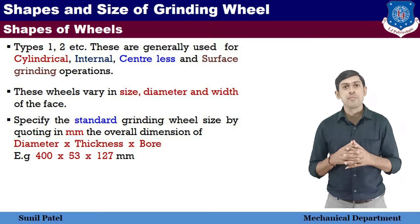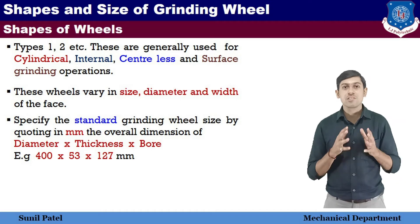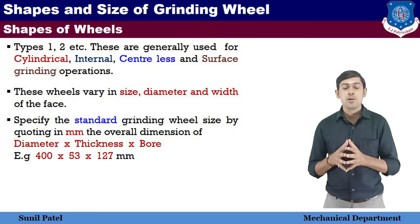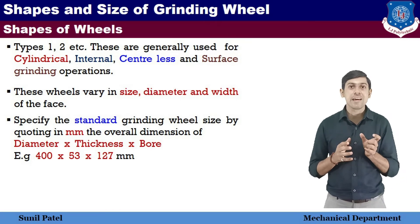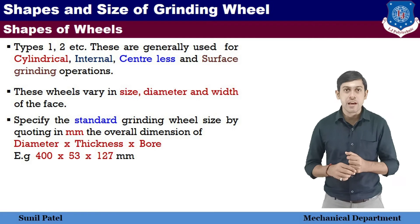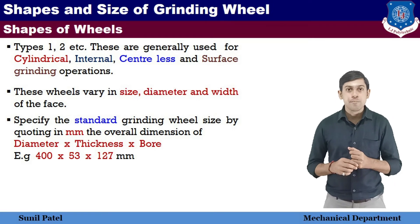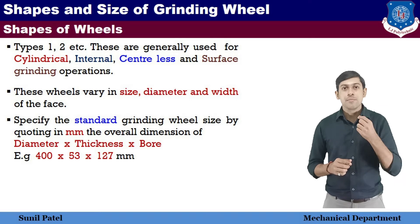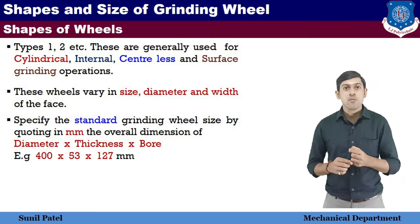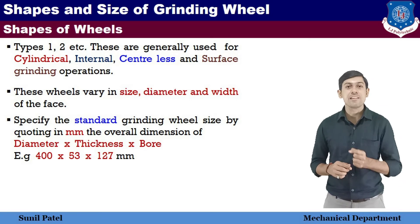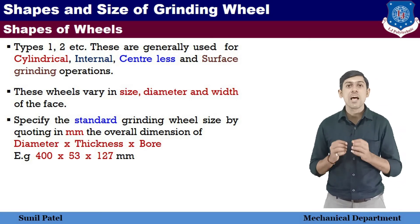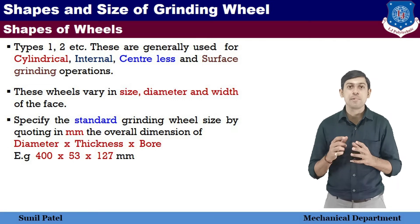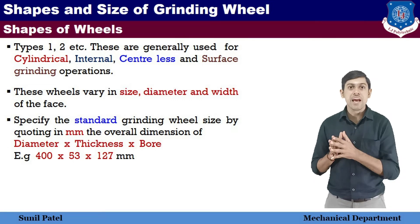The wheel dimensions are specified as follows: the first number is the diameter, the second is the width or thickness. For example, 400 is the diameter, 53 is the width, and 127 is the bore diameter, which is the spindle fit.